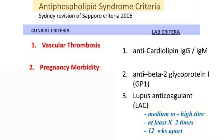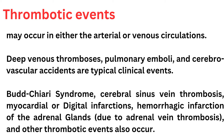Regarding thrombotic events in the clinical criteria, there must be recurrent thrombosis occurring in either arterial or venous circulation. Deep venous thrombosis, pulmonary embolism, and cerebrovascular accidents are typical clinical events. Additionally, Budd-Chiari syndrome, cerebral sinus vein thrombosis, myocardial or digital infarction, hemorrhagic infarction of the adrenal glands due to adrenal vein thrombosis, and other thrombotic events may also occur.